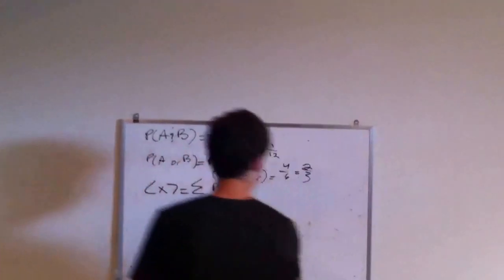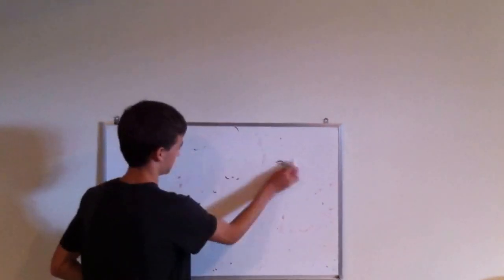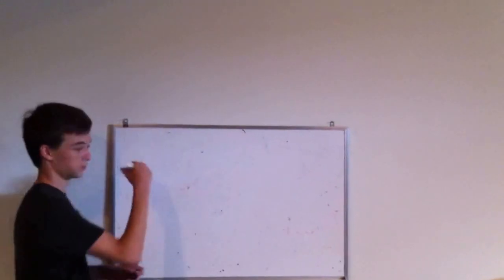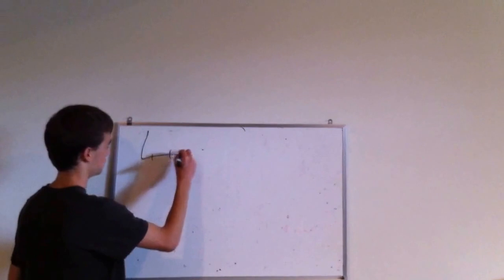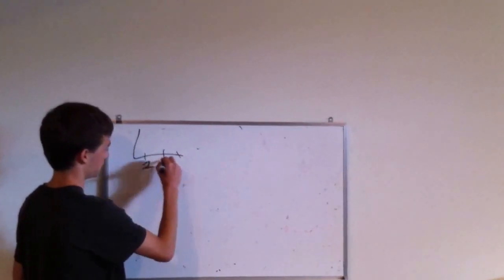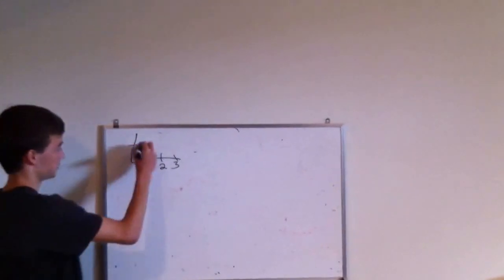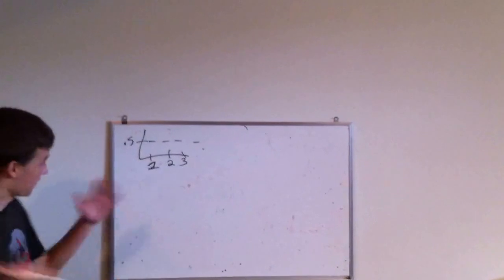Now we're going to get into some things that are more specific to quantum mechanics. This is sort of classical probability. Now we're going to get into quantum mechanics probability. Rather than saying, for instance, with our coin example, you have a graph. This is, say, you flip the coin three times, and you're looking for the probability that it'll be heads, it'll be at 0.5 or 50% every time.